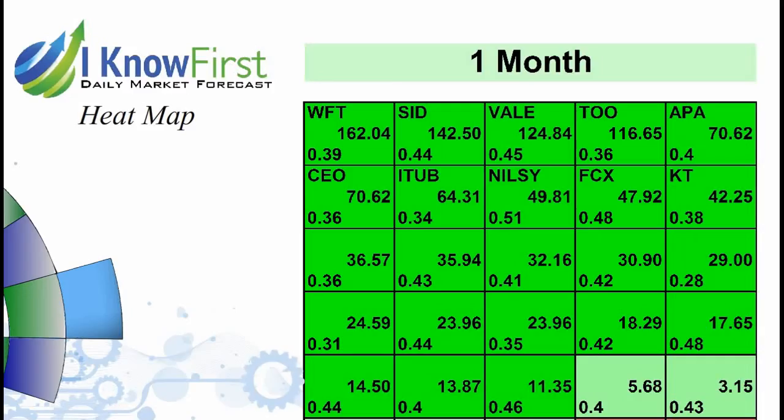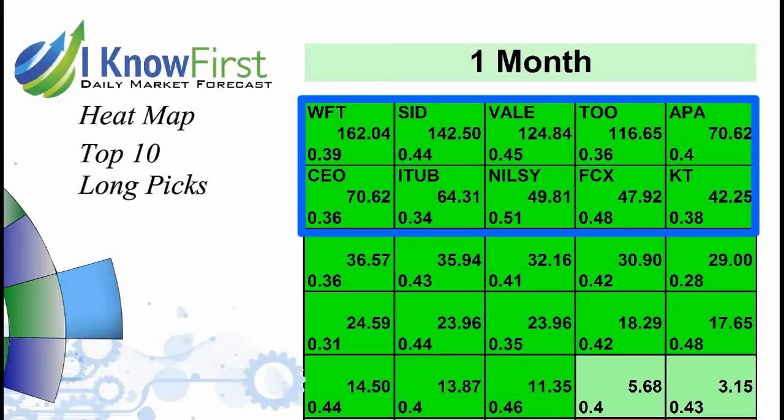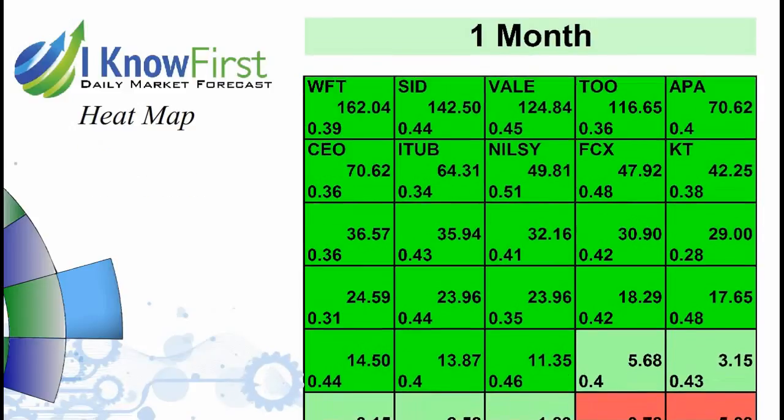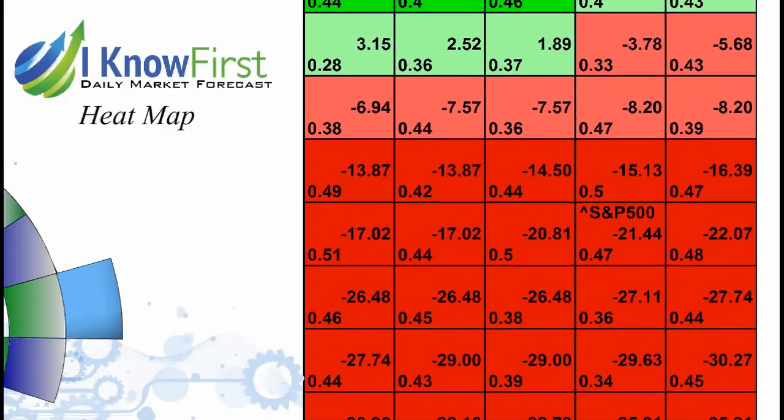We present the algorithmic data in the form of six time range heatmaps. Here you can see the top 10 long picks in the one month horizon. As a part of our top 10 package, you also receive the overall S&P 500 index forecast.